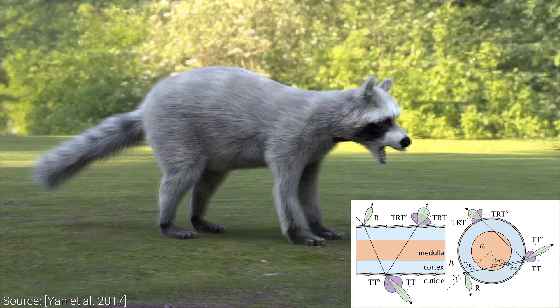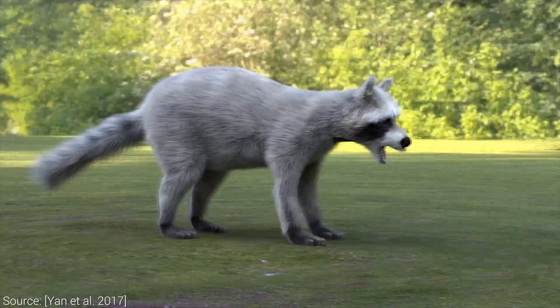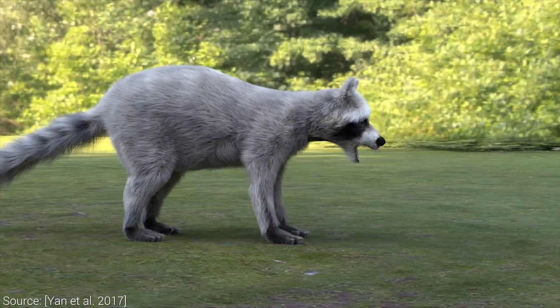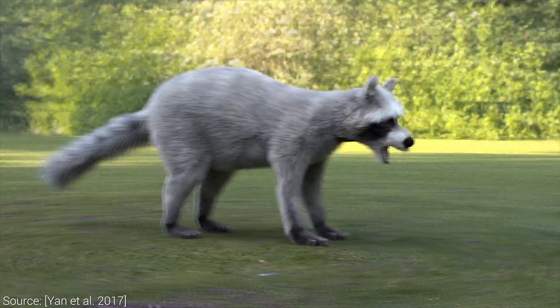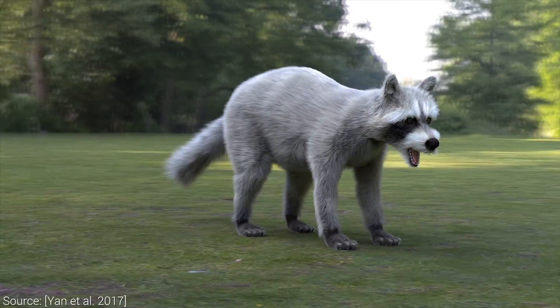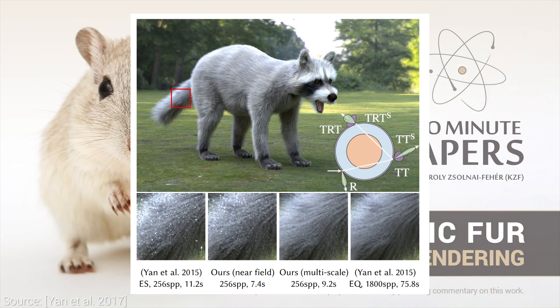Initially, we start out with a noisy image, and this noise gets slowly eliminated as we compute more and more rays for the simulation. SPP means samples per pixel, which is the number of rays we compute for each pixel in our image. With previous techniques, using 256 samples per pixel leads to a very noisy image, and we need to spend significantly more time to obtain a clear, converged image.